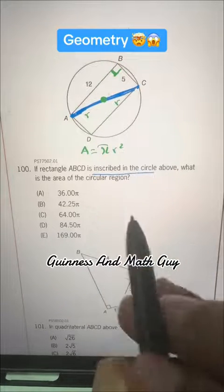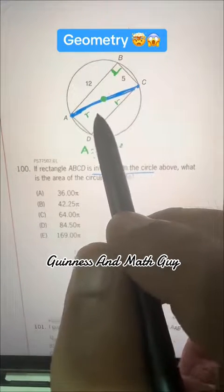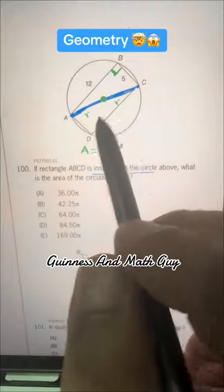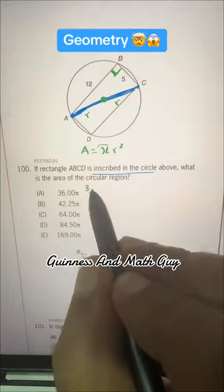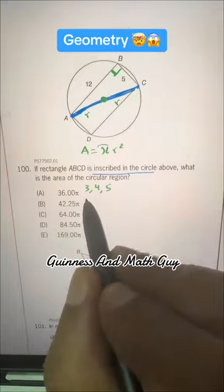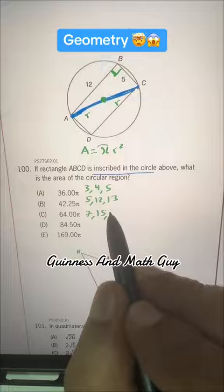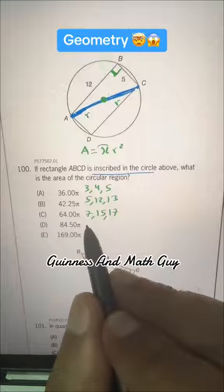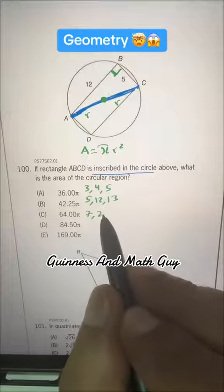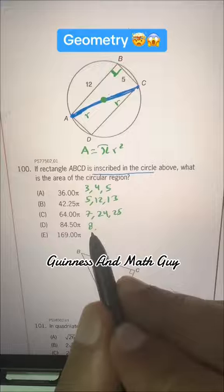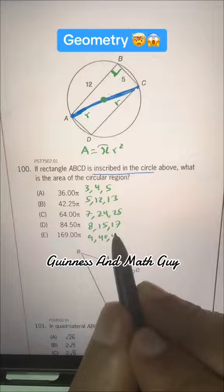I have in other videos told you that there are some combinations that if we memorize them—there are five that are frequently used in competition exams and admission exams. They are 3, 4, 5; 5, 12, 13; 7, 24, 25; 8, 15, 17; and 9, 40, 41.